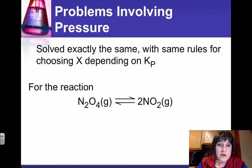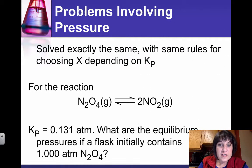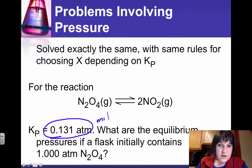So if I have a reaction where dinitrogen tetroxide turns into two molecules of nitrogen dioxide, then I need to see what is the value of Kp. So if Kp is 0.131, then this is what we call sort of mid-range. It's neither high nor low.